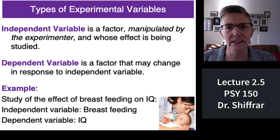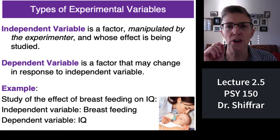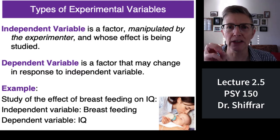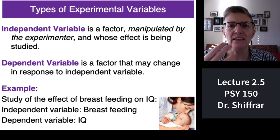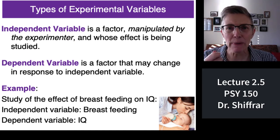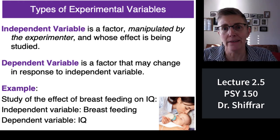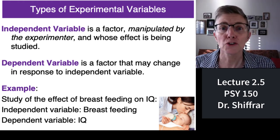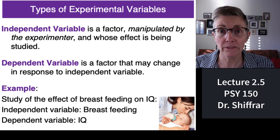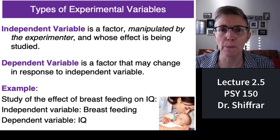Independent variables are the variables that the experimenter manipulates — the effect that's being studied. Dependent variables depend on the independent variables, so dependent variables change in response to the independent variables.